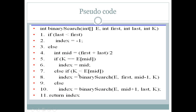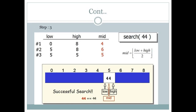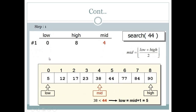If the key is not less than the element at mid, we set first equal to mid plus 1, keep last as it is, and again call binary search recursively. We repeat this step until we find our mid value equal to the key, at which point mid becomes the index and we return it as the answer. In our example, the answer is index 5.